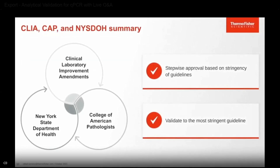As a recap of all the accrediting organizations discussed today, it is a stepwise approval based on the stringency of guidelines. CLIA is at the bottom, then comes College of American Pathologists, followed by New York State being one of the most stringent.